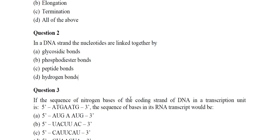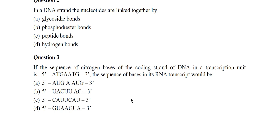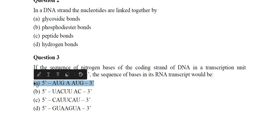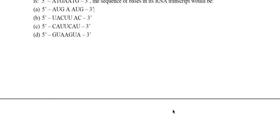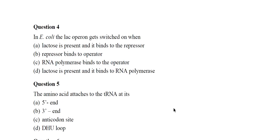Question 3: If the sequence of nitrogen bases of the coding strand of DNA in a transcription unit is 5' ATGAATG 3', the sequence of bases in its RNA transcript would be 5' AUGAAUG 3'. This is the correct answer.